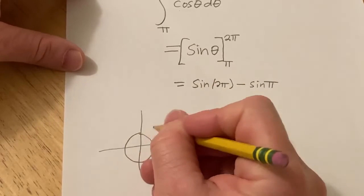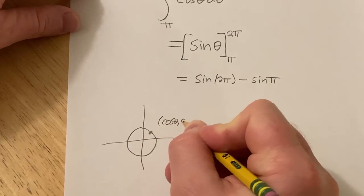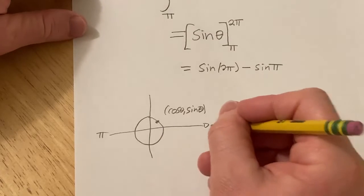Every ordered pair has the form cosine theta, comma sine theta. So here's zero, here's pi, and here's 2pi.